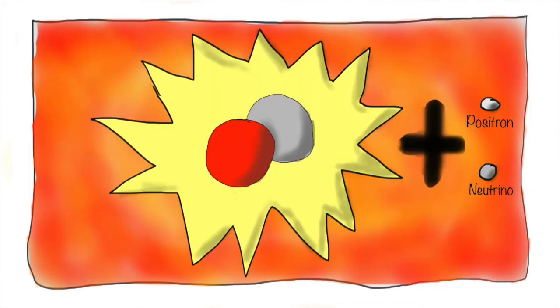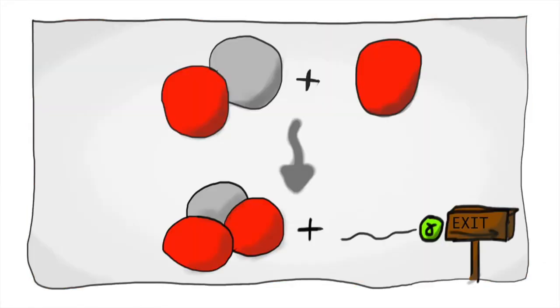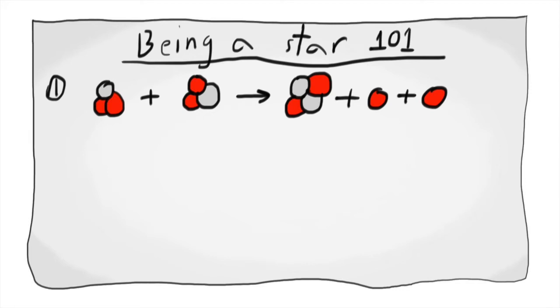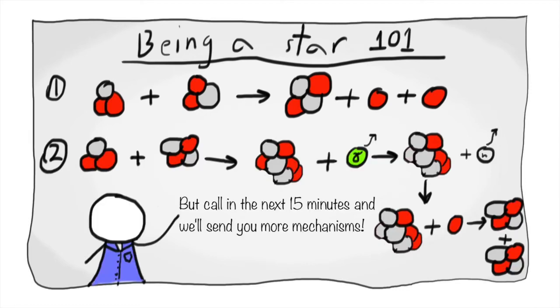Our deuterium then zooms around the core until it happens to collide with another proton to produce a helium-3 nucleus and a gamma ray which gets shot out of the core. But this is where our proton-proton chain splits, either going one way to form one helium-4 nucleus or another way to form two helium-4 nuclei. There are even more ways in which our Sun can happily beat its radioactive heart, but they make up less than one percent of all proton-proton chain reactions.